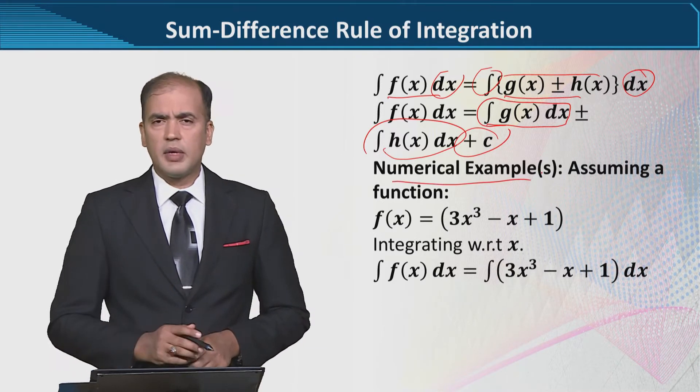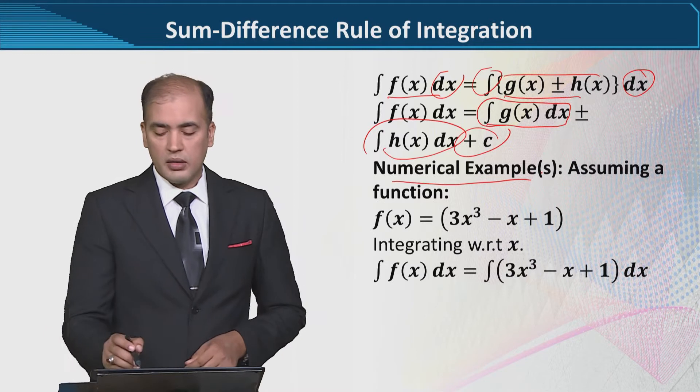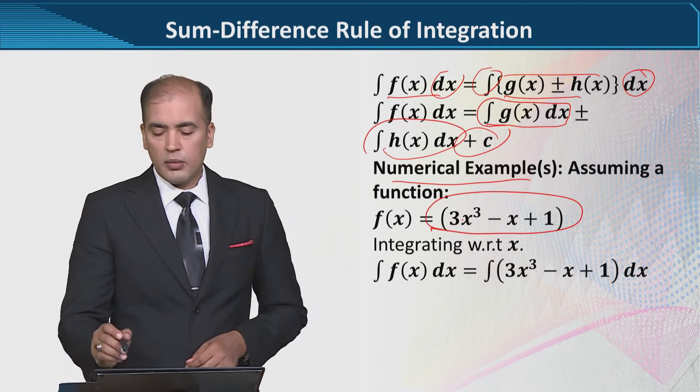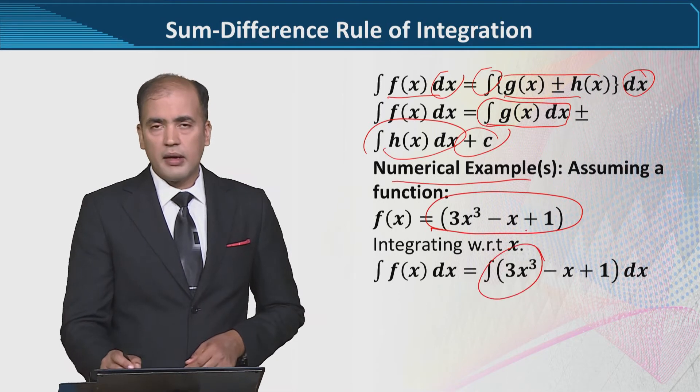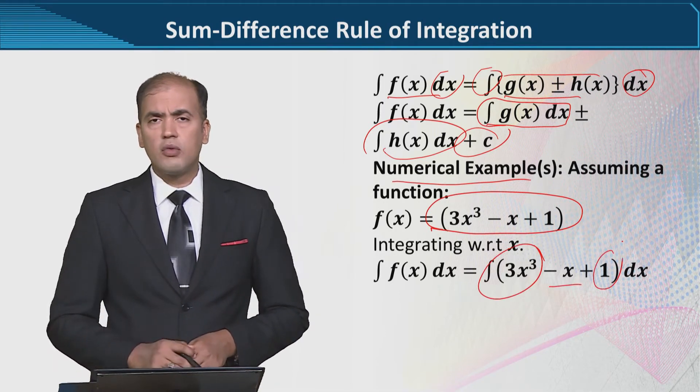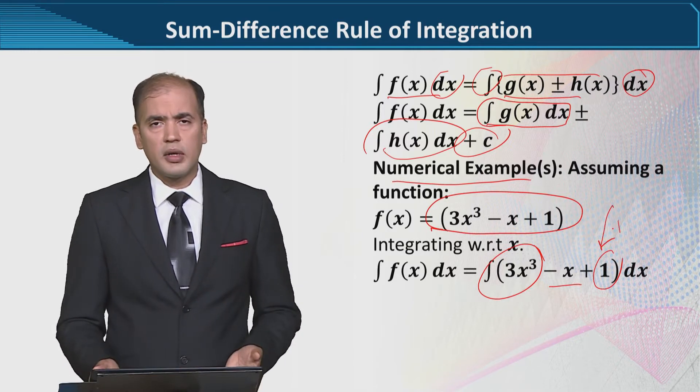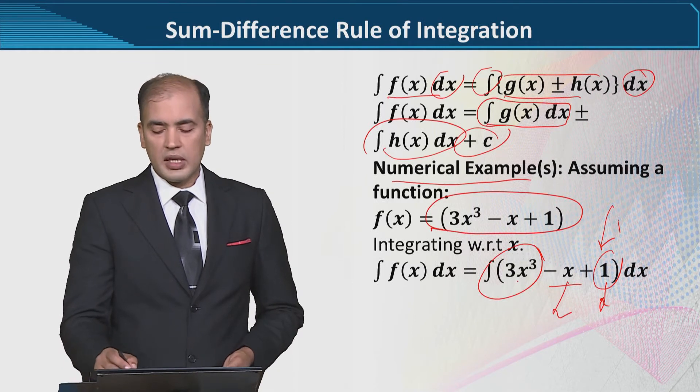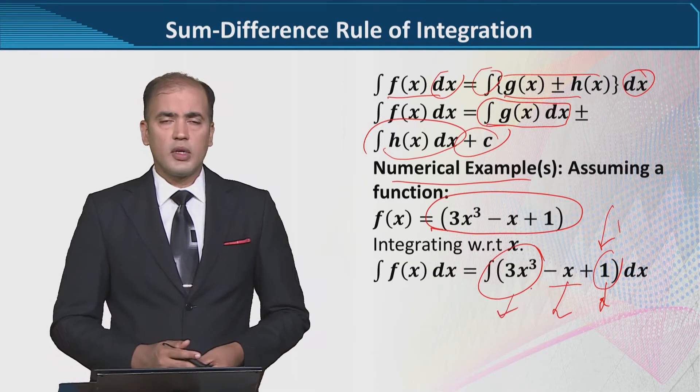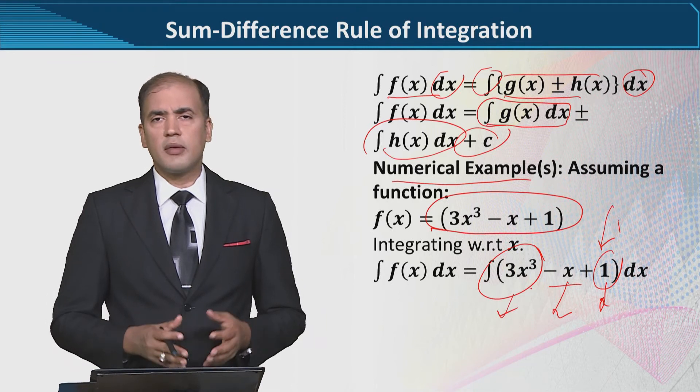Without a numerical example, the message cannot be conveyed properly. We are going to do this with the help of this numerical example. This is a function, in this case we have a function. You would be surprised if I call it a function, but you should not be. Because this is a constant function, this is a linear function, and this is a cubic function. So we can see three separate functions.